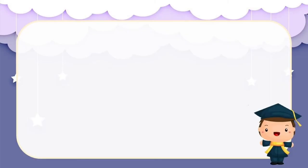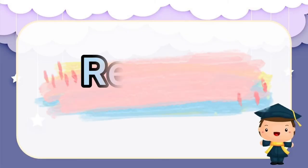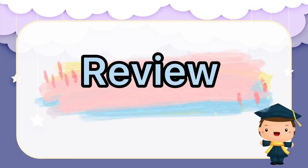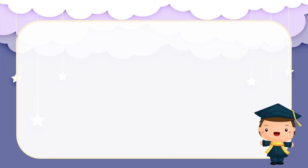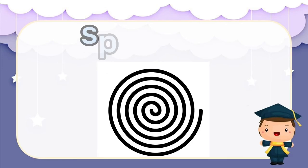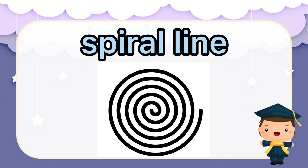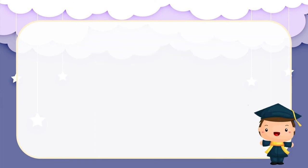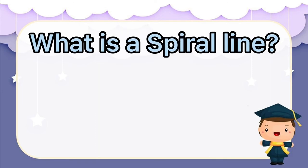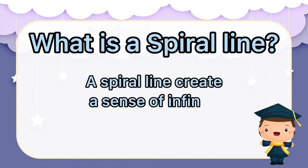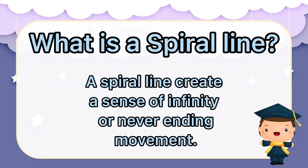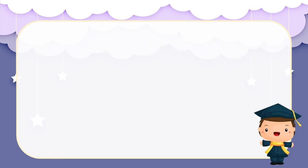Did you enjoy watching that? Now let's have a review. On our previous lesson, we learned about spiral line. What is a spiral line? A spiral line creates a sense of infinity or never-ending movement.